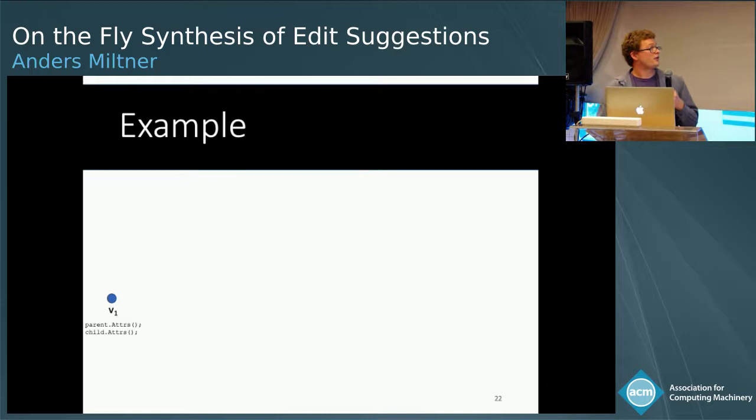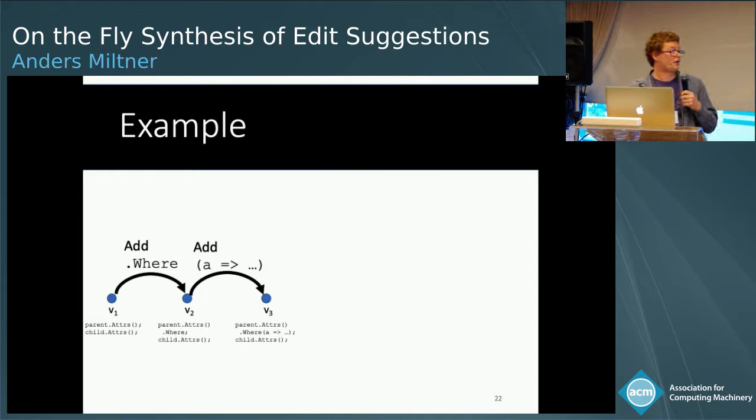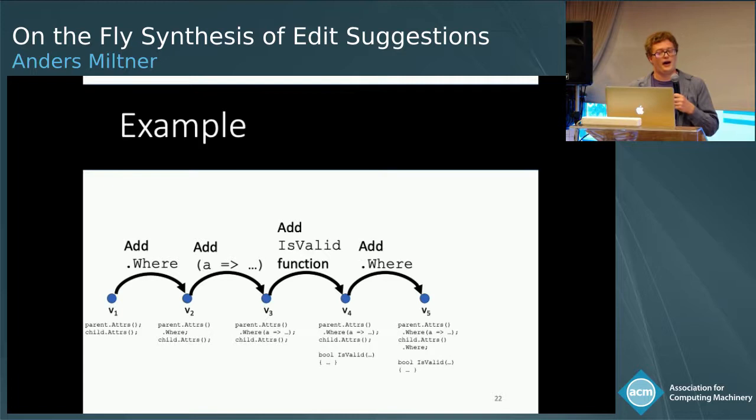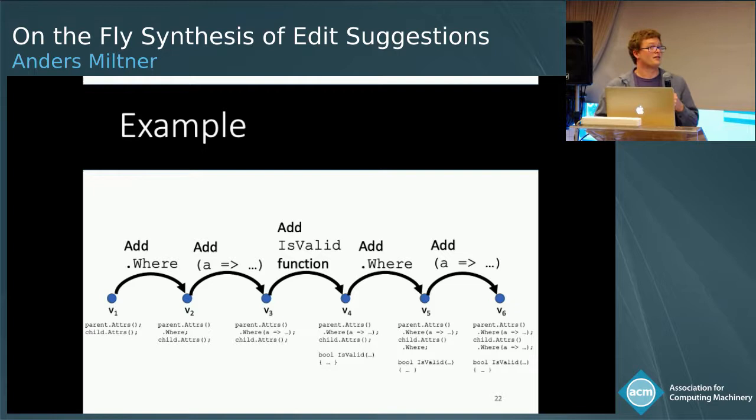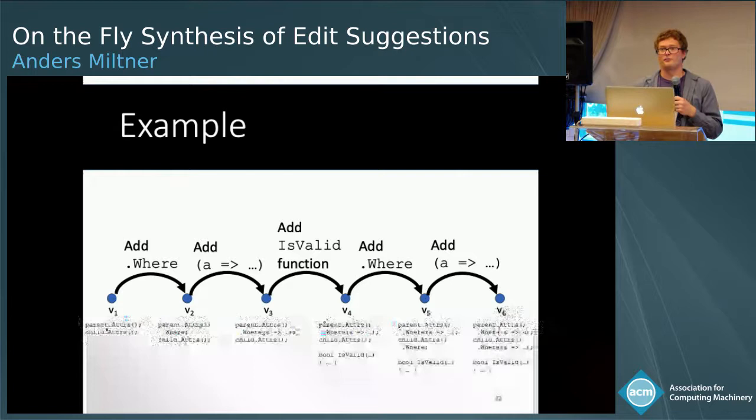I'll continue with the extended example on parent and child dot attrs. I start out with both as parent.attrs and child.attrs. Then I add '.where' to the parent, add the lambda, add in the is_valid function, and then do the same thing to the child — add '.where' and the lambda. Note this is a very simplified view of the actual path; in real life, even small edit sequences like this would have much larger graphs.